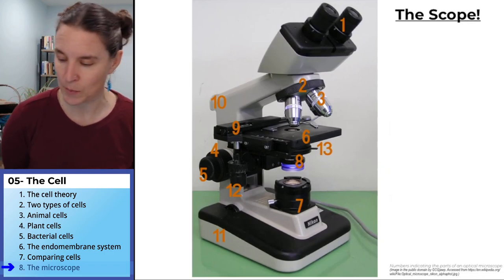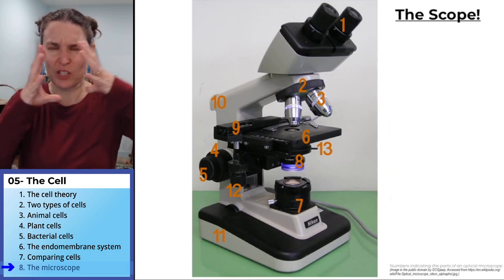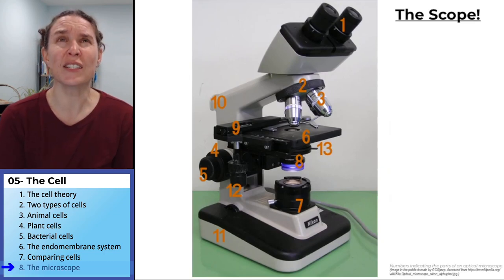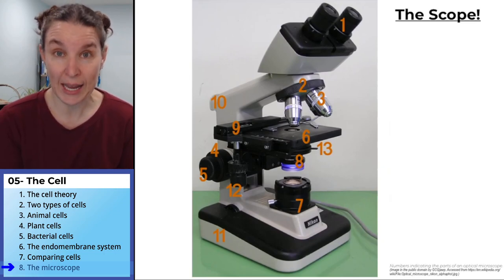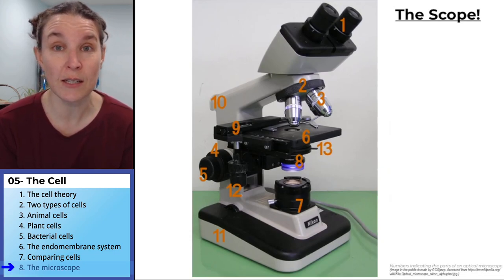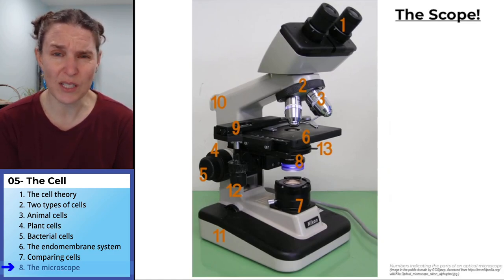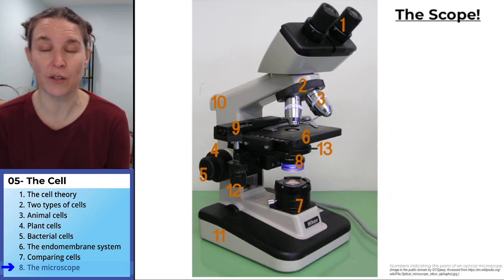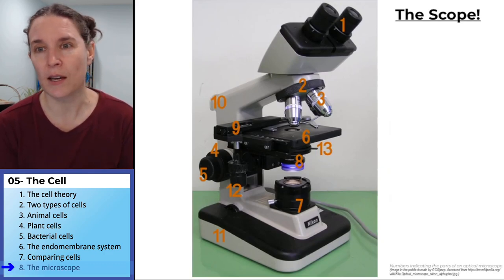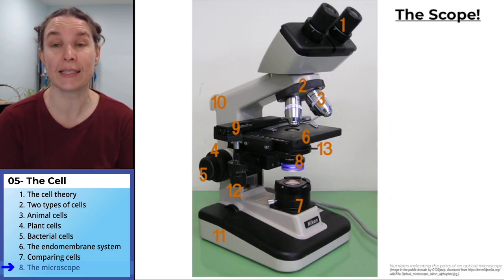Now that goes back to that image that I showed you earlier with kind of looking at scale. Cells are so small. There are some cells like a human egg cell produced by humans who have ovaries. That's the biggest cell that we make. And supposedly you can see it with your bare eyeball, but having a microscope so that you can see cells is way easier.